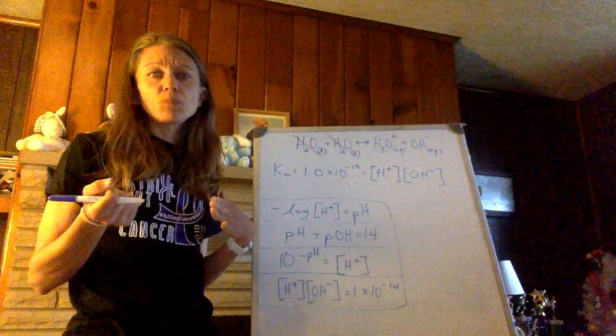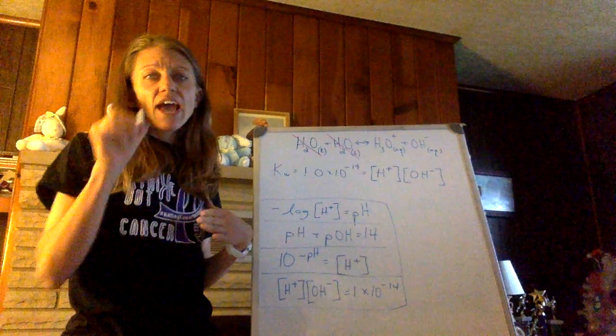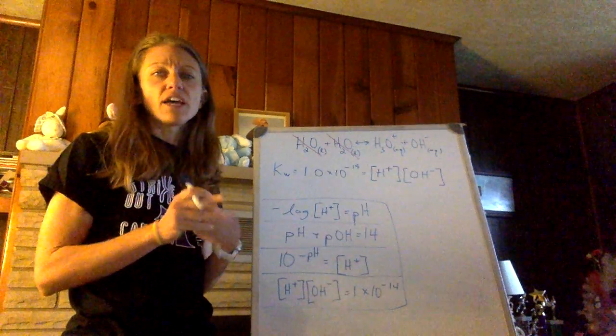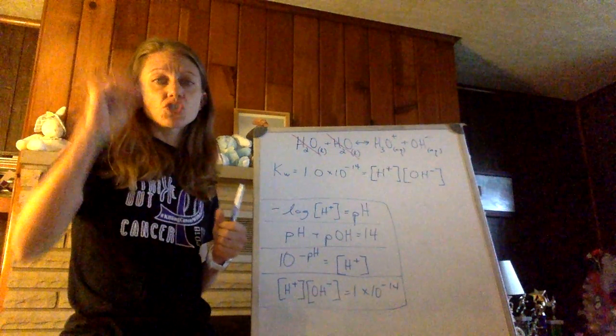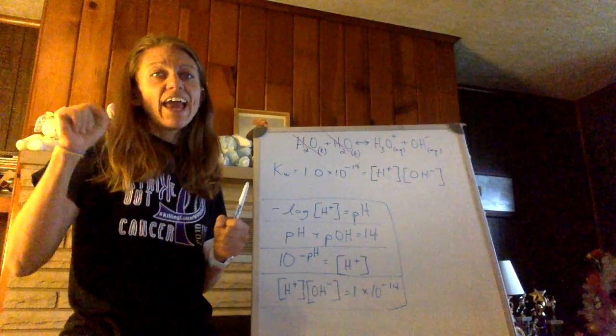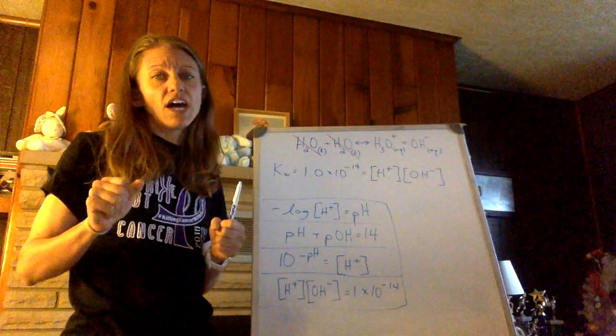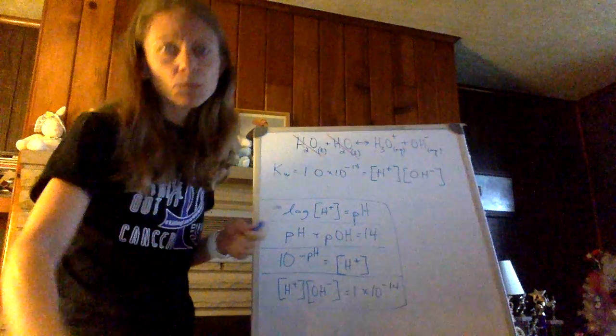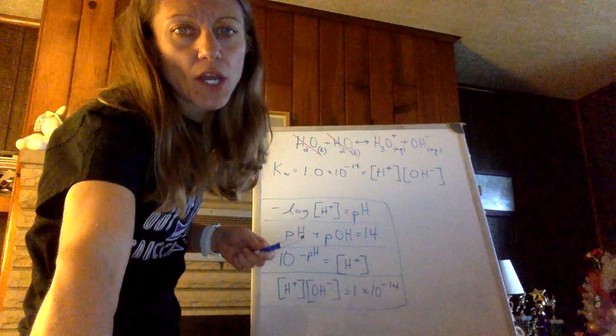The pH decreases as pOH increases. And the comparisons here, the two columns, I think are kind of nice. It gives you the pH of the solution and your concentration of hydrogen ions that match up with those.